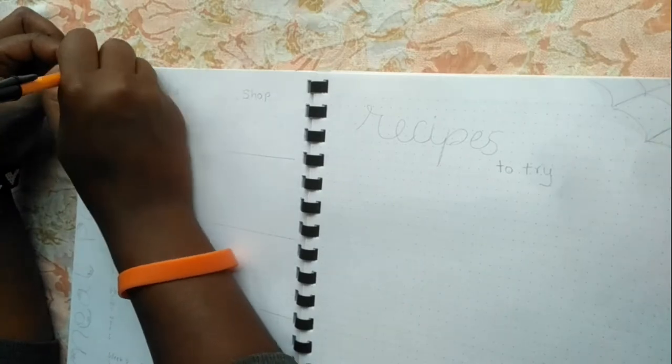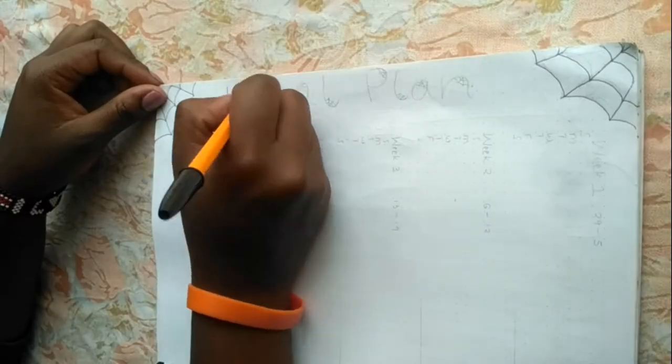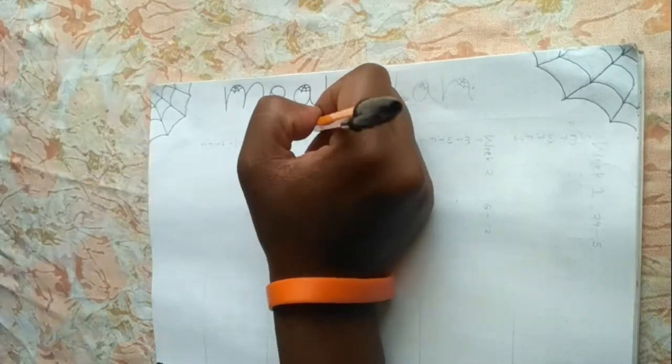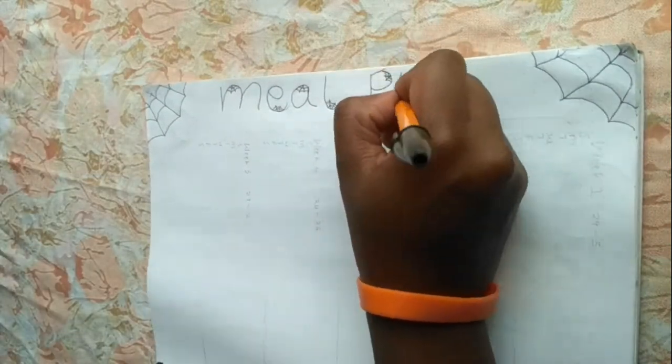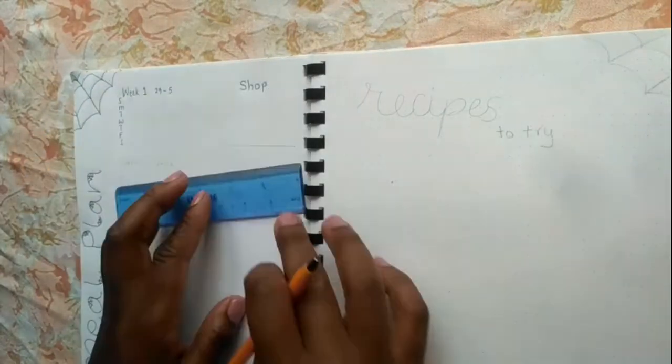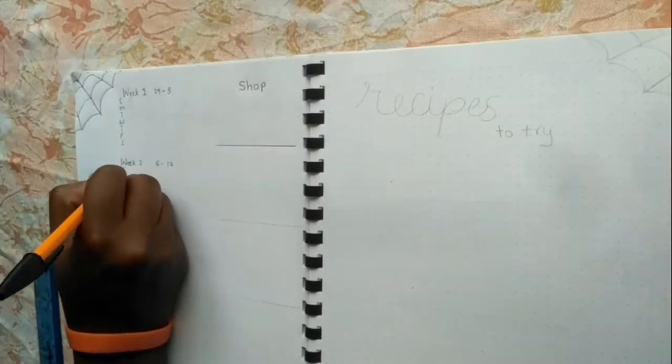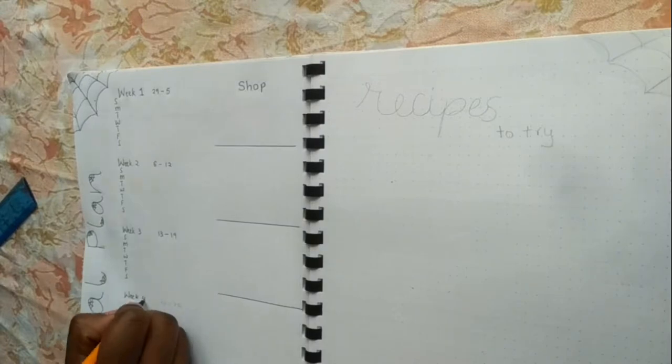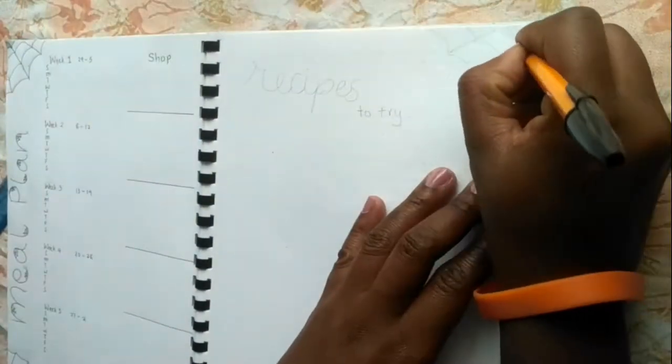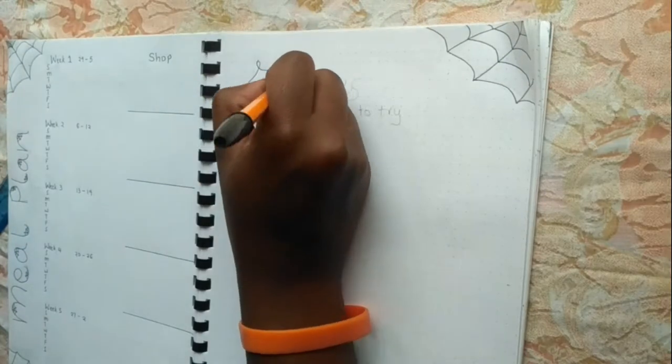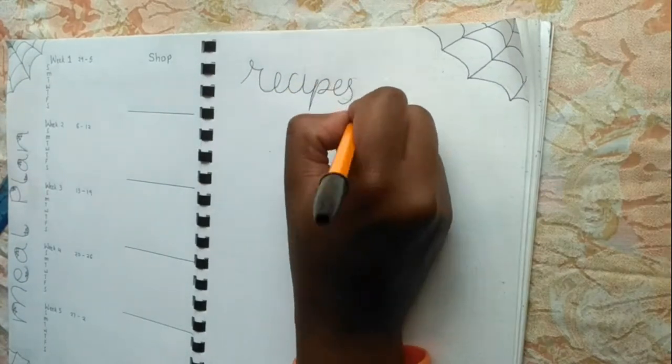A meal plan page is an essential in my bullet journal. So all I have here is just a little bit of detail to keep up with the theme and then my title which I decided to have at the side of the page. Then all I will add into this is the weeks and my grocery shop spots for each week. I like autumn themed recipes and I will definitely be keeping an eye out for those ones on YouTube and I have a spot for that.